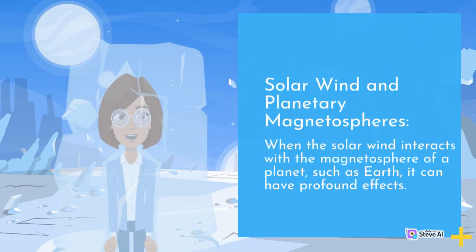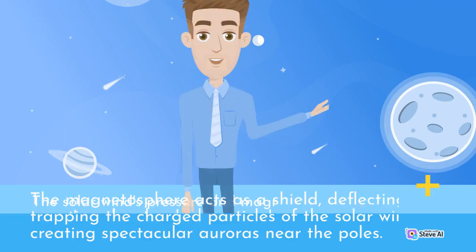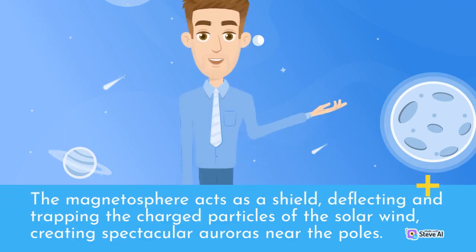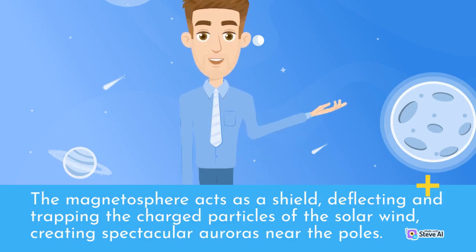Solar Wind and Planetary Magnetospheres. When the solar wind interacts with the magnetosphere of a planet, such as Earth, it can have profound effects. The magnetosphere acts as a shield, deflecting and trapping the charged particles of the solar wind, creating spectacular auroras near the poles.